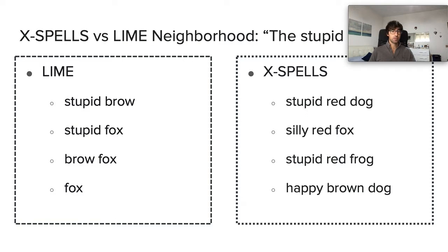Let's analyze how EXPELS differs from LIME in terms of neighborhood generation. If the original sentence is 'the stupid brown fox,' LIME only works by suppression and generates sentences like 'stupid brown,' 'stupid fox,' 'brown fox,' etc. On the other hand, EXPELS generates similar sentences by replacing words or working with synonyms, antonyms, and related words — all driven by the quality of the pre-trained variational encoder. So sentences can be 'stupid red dogs,' 'silly red fox,' etc.